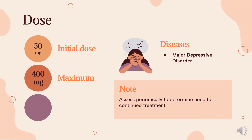Dose for major depressive disorder: 50 mg orally once daily. Higher dosages, up to 400 mg per day, have been used, but no additional benefit was demonstrated at doses greater than 50 mg per day, and increased side effects have been reported. Assess periodically to determine the need for continued treatment.